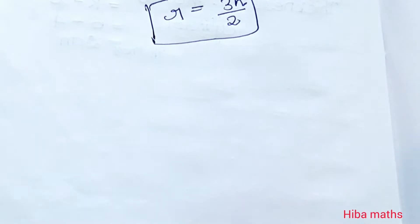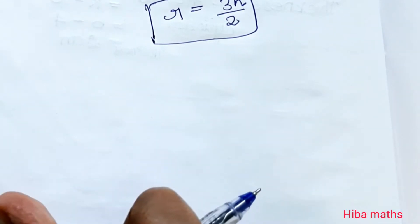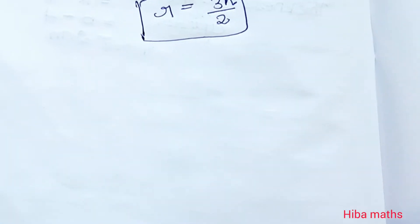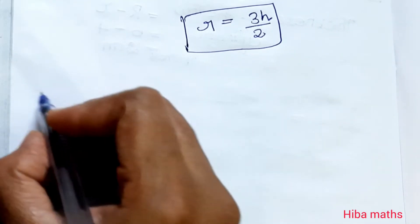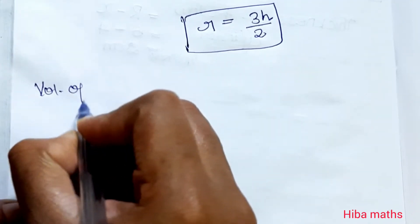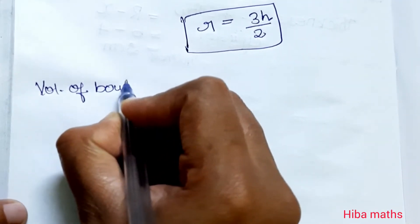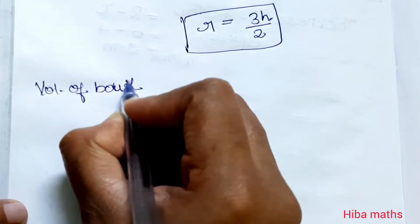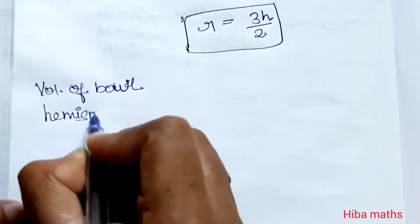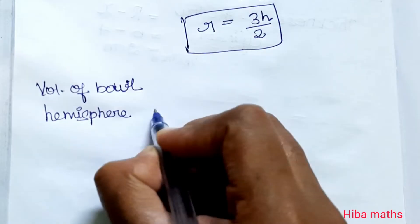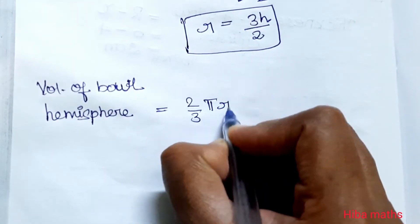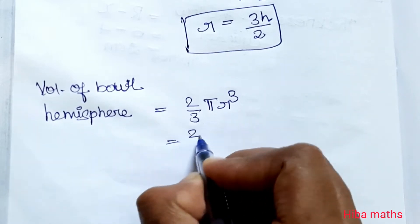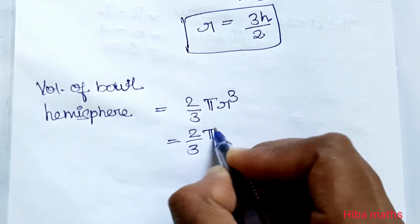Now we know two volumes. Volume of hemispherical bowl equals (2/3)πr³. Since the radius of the bowl equals r, the volume of the hemisphere is (2/3)πr³.